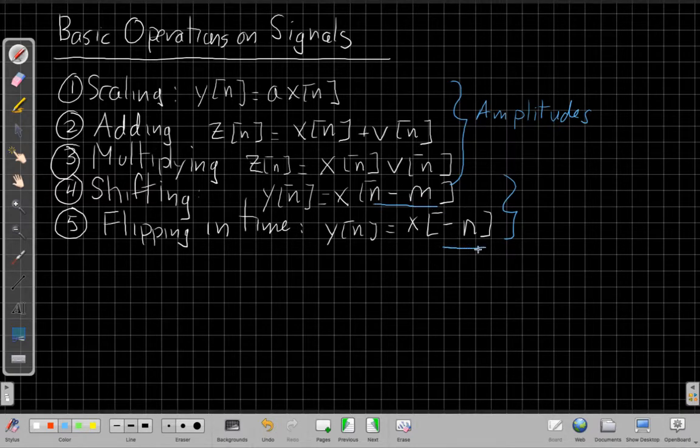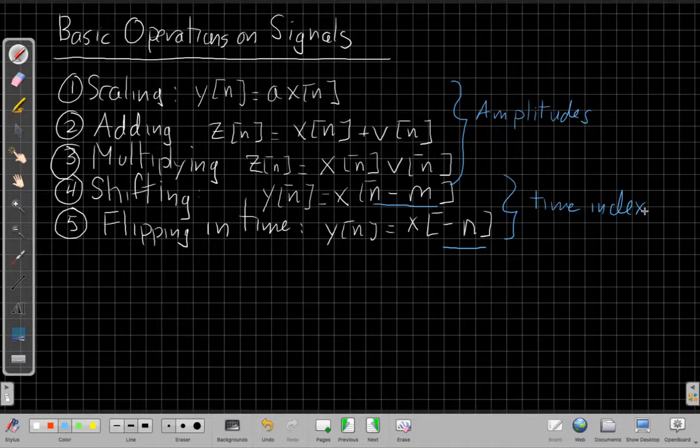When the things happen outside the brackets with the first three, that means things are happening with amplitudes. As I look at what's different about these last two, the mathematical notation is showing up inside the brackets, which is it's happening to the time index. So these are things that are shifting what's happening to the time index. So these tend to be things that move the signal left and right or flip it left to right, whereas the amplitudes are things that happen to the values of the signal going up and down the vertical direction.